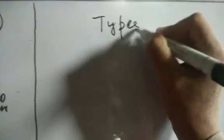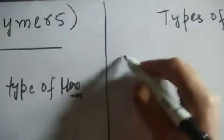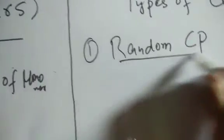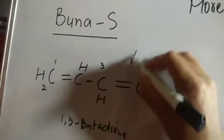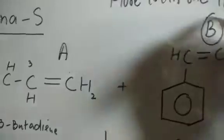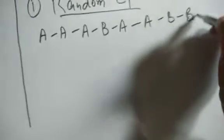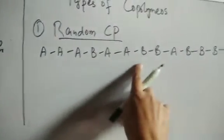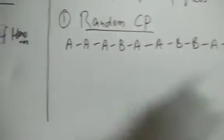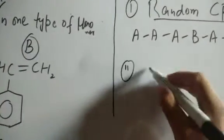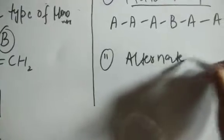The first type is called a random copolymer. In a random copolymer, we label the monomer units as A and B. If the monomers are randomly oriented — so we don't have any fixed arrangement like A, A, A, then B, B — wherever the monomers are randomly oriented, it is called a random copolymer.